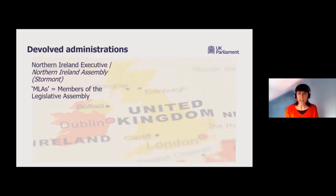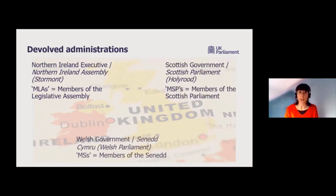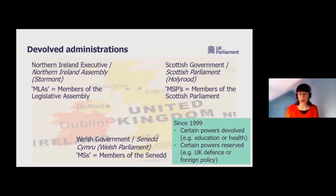Of course, in the UK, we do have a devolved context. In Northern Ireland, we have the Northern Ireland Executive and the Northern Ireland Assembly. In Scotland, we have the Scottish Government and Scottish Parliament. And in Wales, we have the Welsh Government and Senedd Cymru, or the Welsh Parliament. So if you live or work in one of those devolved areas, there is an extra layer of representation and decision making between any more local government and the UK Parliament. Some issues are devolved to those devolved administrations — things like education, health, justice, agriculture, language, etc. And some powers are reserved to Westminster, such as defence or foreign policy.